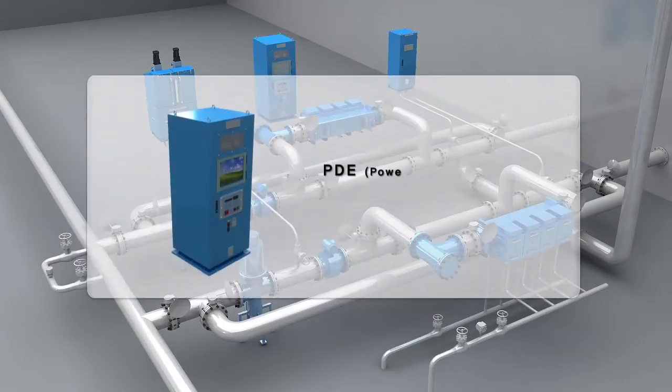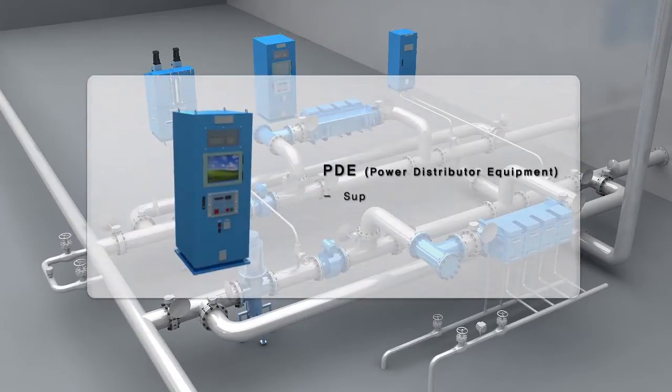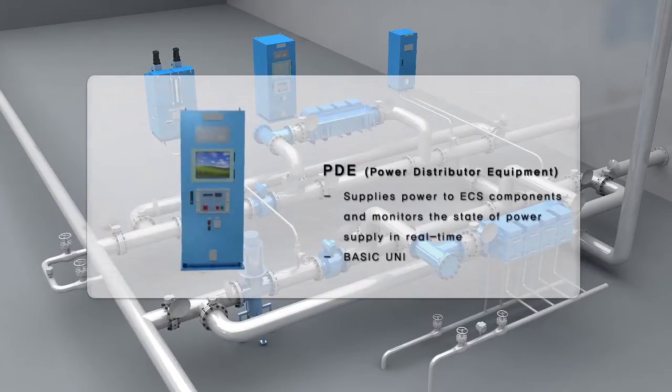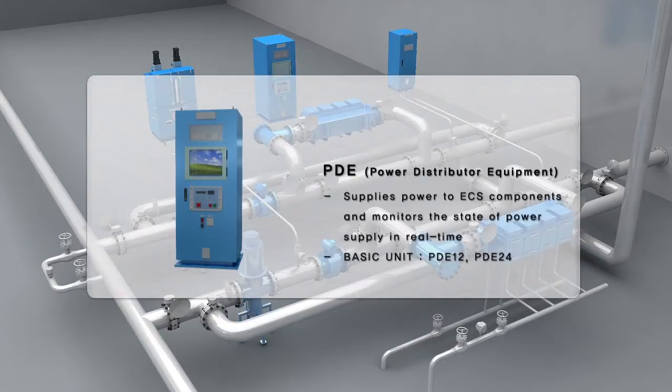PDE supplies the necessary current to the chamber after converting 440 volts AC to DC, depending upon the salinity of the water, enabling operational controls and facilitating ECS electrolysis.